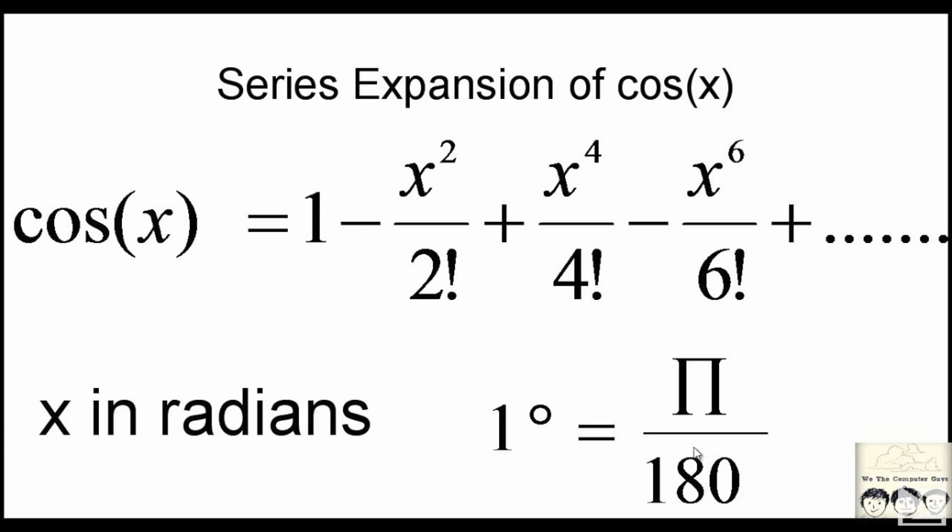He did the same thing for cosine of x, discovering that it was equal to 1 minus x squared over 2 factorial plus x to the fourth over 4 factorial minus x to the sixth over 6 factorial and so on.